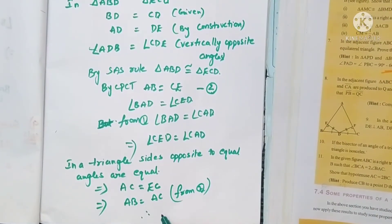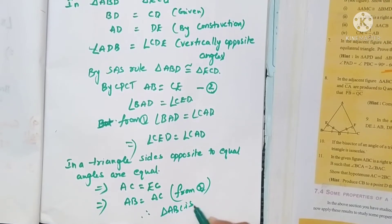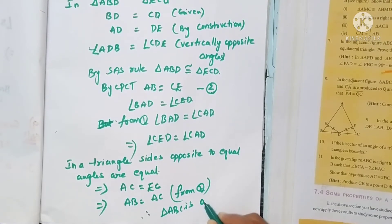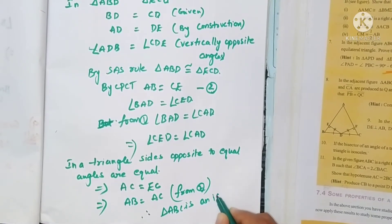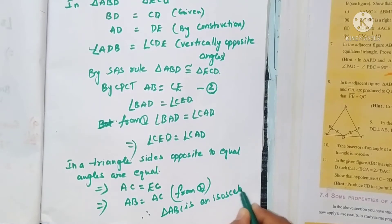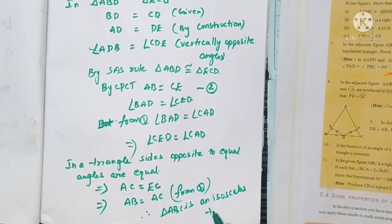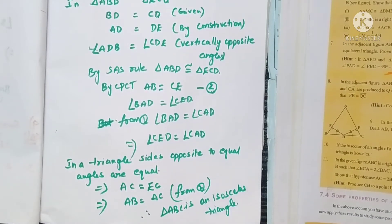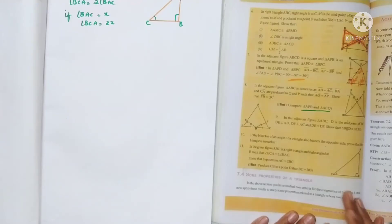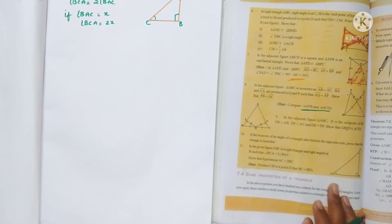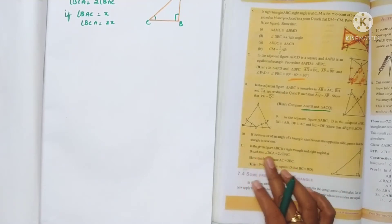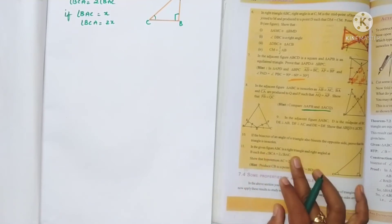AB equals AC means triangle ABC is an isosceles triangle.